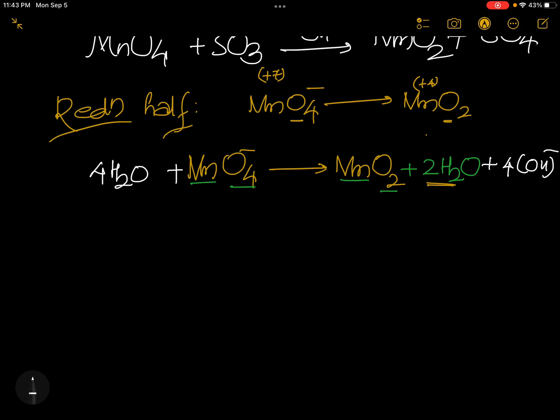This we are doing in basic medium. Now hydrogens, oxygens, manganese, everything is balanced. Here the charge is minus 1 and this side the charge is minus 4. So this comes this side and becomes plus 4 means you need to add 3 electrons here.